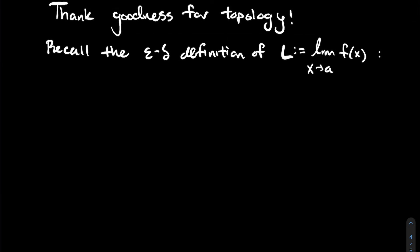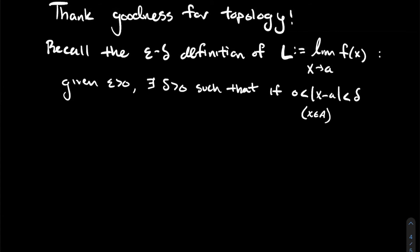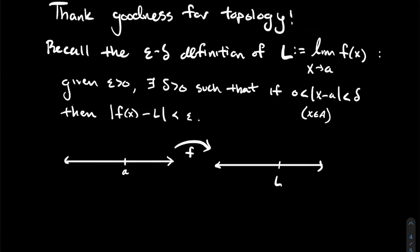Here I'm assuming L is a real number. That means: given a real positive number epsilon, there exists a real positive number delta — epsilon is arbitrary, but once you have an epsilon, there's some delta related to it — such that if the absolute value of x minus a is between zero and delta, meaning x and a are within delta of each other and x is not allowed to actually equal a, then f of x minus L is less than epsilon. In other words, the output of f is sufficiently close to L.